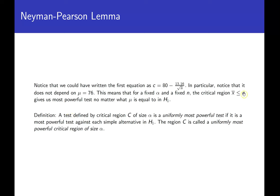Just because it says most powerful test does not mean the power is high — it just means it's as good as it can get. If you want higher power, the only way to achieve it is to increase the sample size. If you only care about a particular significance level and not the actual power number, the critical region of this form is the most powerful you can use for a particular C.